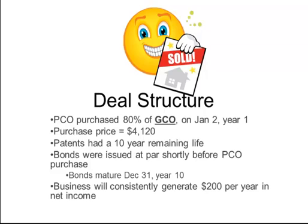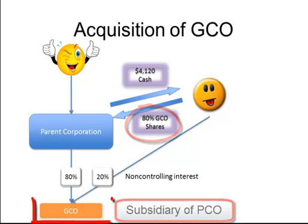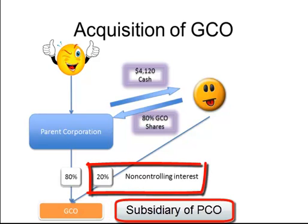At the time of acquisition, GECO held patents with a 10-year remaining life and had recently issued bonds maturing in 10 years. Bob was attracted to the business because of its steady cash flows and low risk. The business has consistently delivered $200,000 of net income each year and is expected to continue to do so. Parent corporation acquired 80% of GECO's shares and now holds GECO as a majority controlled subsidiary with a 20% non-controlling interest held by the previous shareholders.